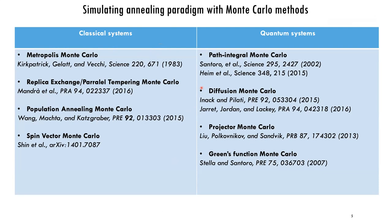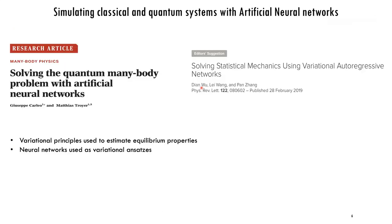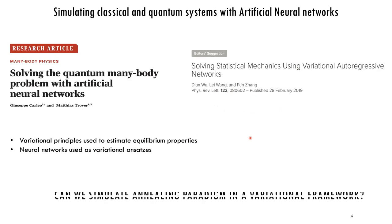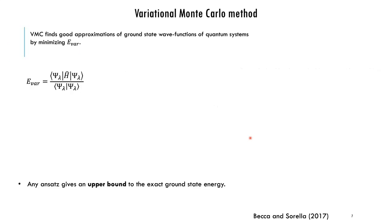So we looked at methods from machine learning that also have the purpose of simulating the dynamics of systems. We got inspired by two papers: the famous paper by Carleo and Troyer, where they used neural networks to find ground-state properties of quantum many-body systems, and this recent paper by Wu, Wang, and Zhang, where they use neural networks to find properties of classical systems. In both papers they use the variational principle with neural networks as variational ansätze, so we thought of using this variational framework to simulate annealing.